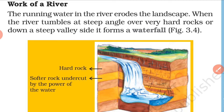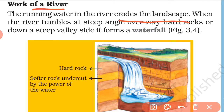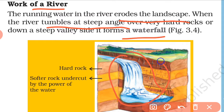Work of a river: The running water in the river erodes the landscape. When the river tumbles at a steep angle, coming downward, it creates a waterfall.